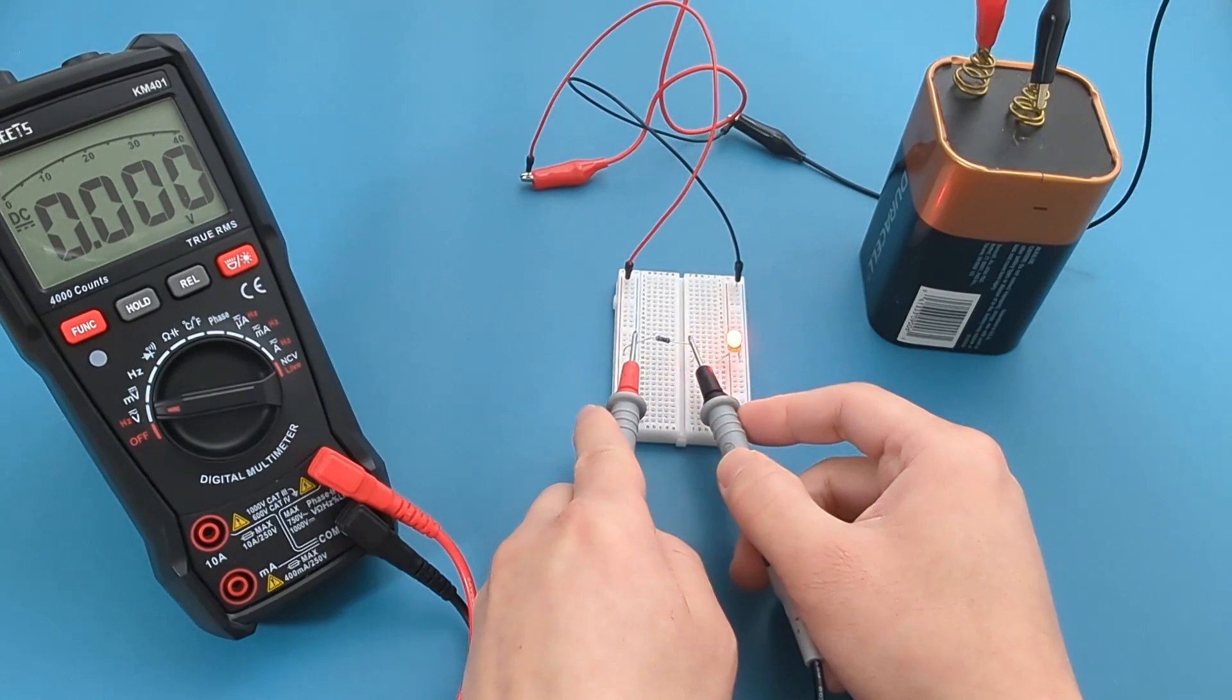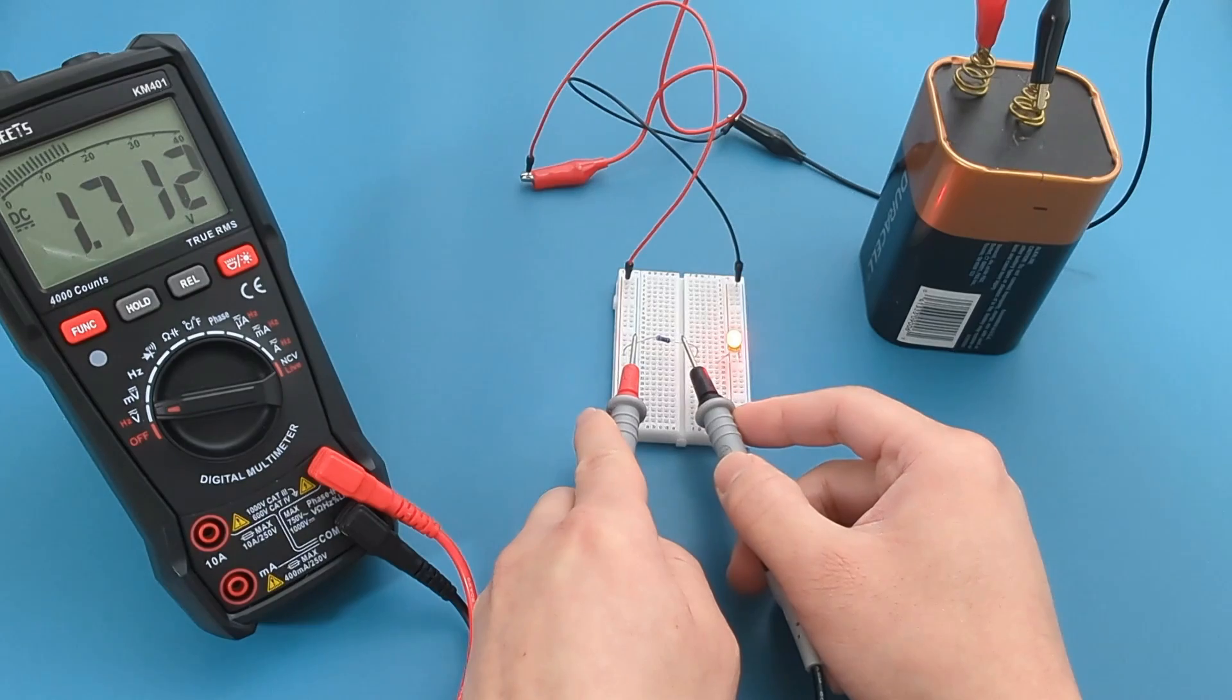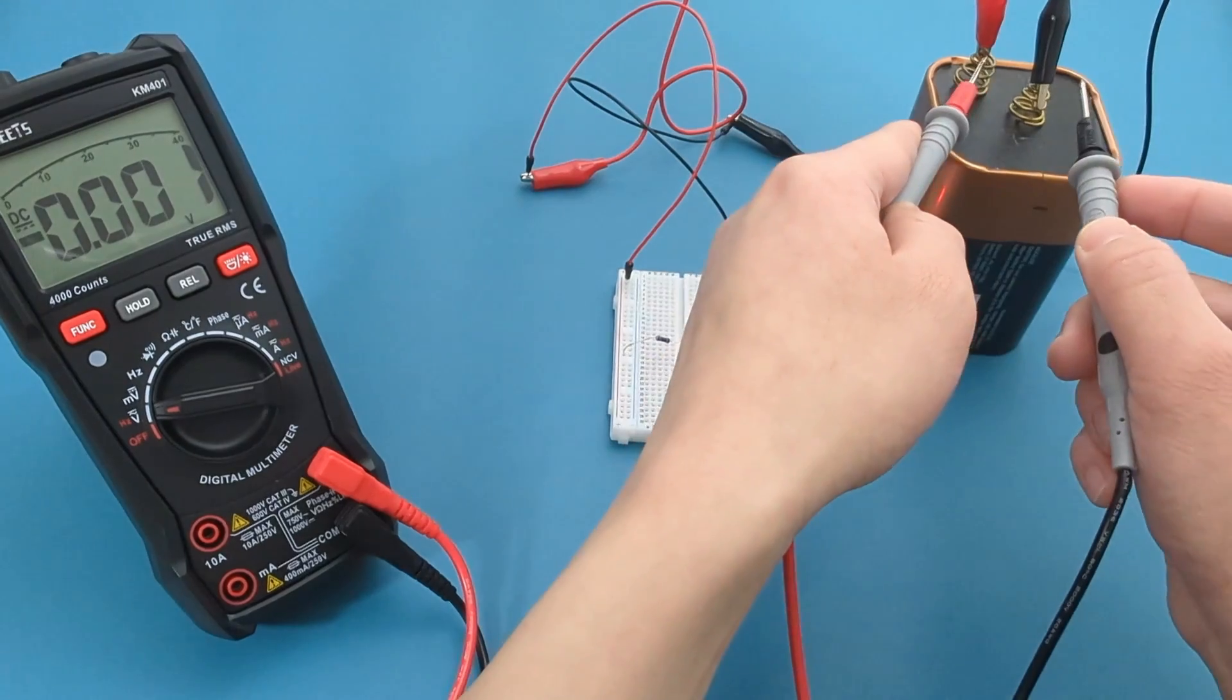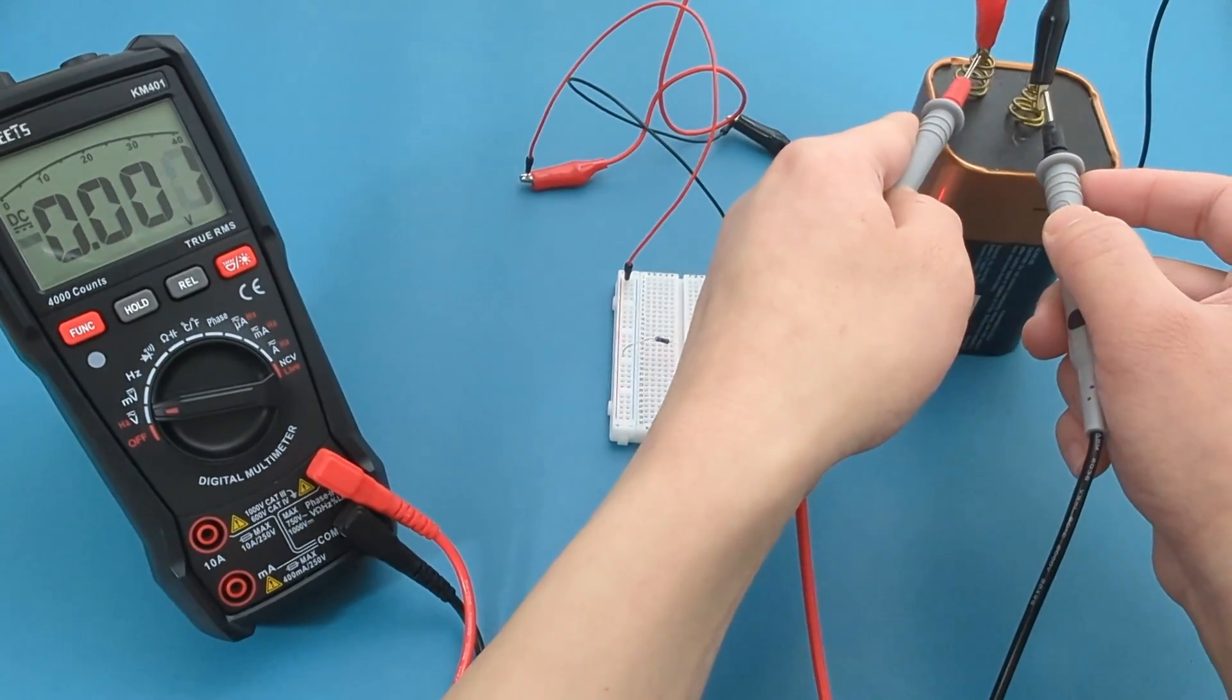Touch the probe leads to the resistor. The reading is around 3 volts. We expected around 4 volts for the resistor. The voltage drop is less than expected because the battery has a lower voltage.